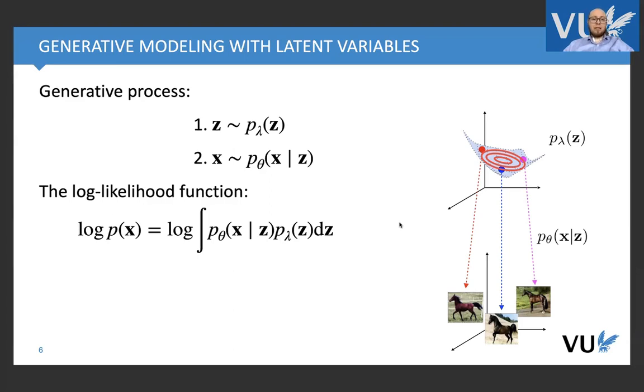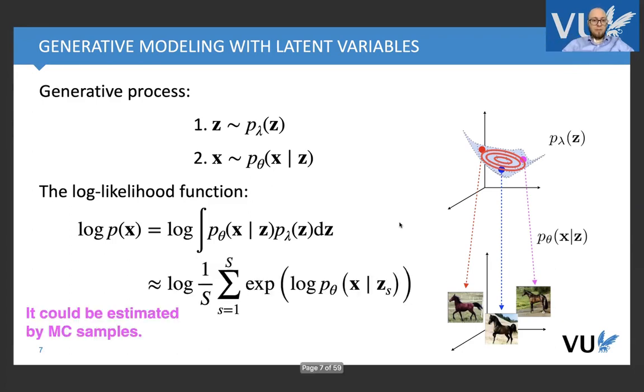And our objective was the log likelihood function, where inside the log we have to calculate integral with respect to low dimensional z's. And of course, we can estimate it or approximate it using Monte Carlo samples, right?